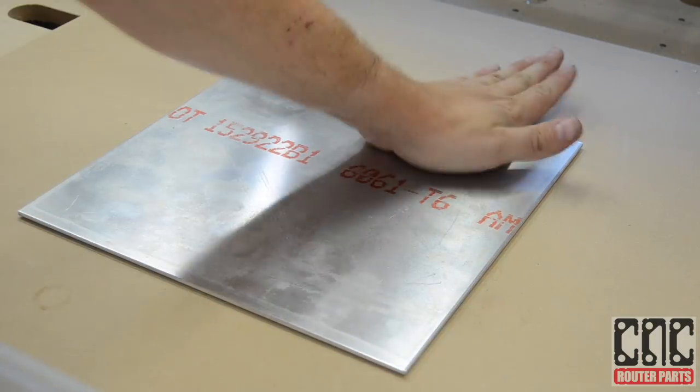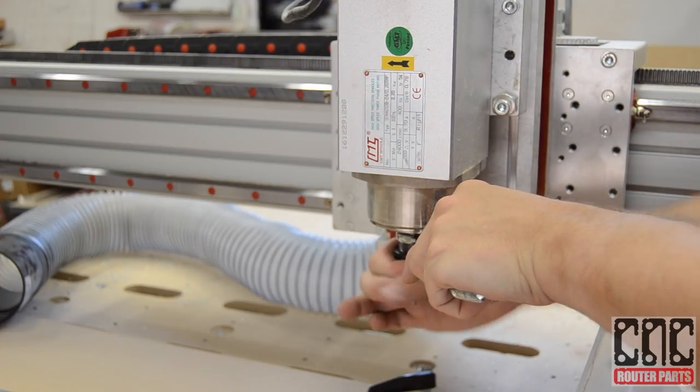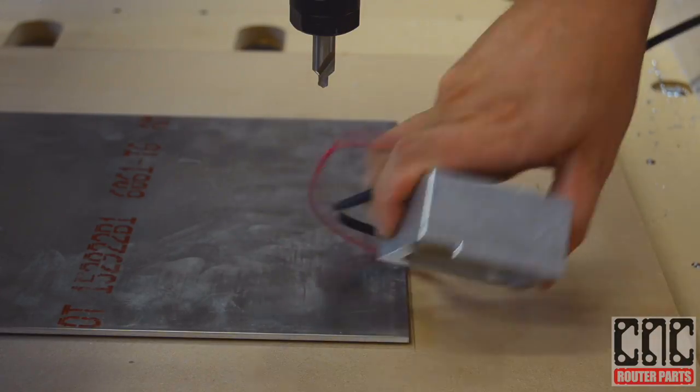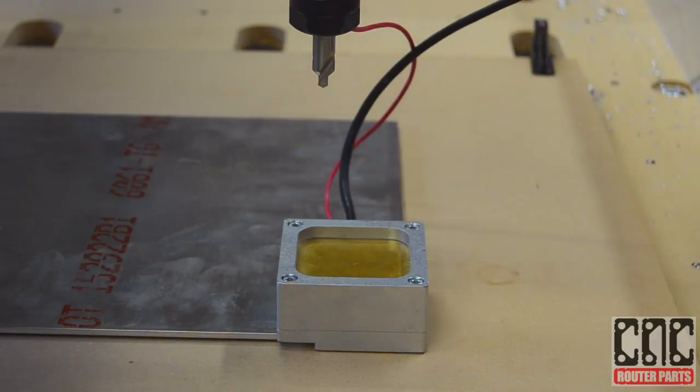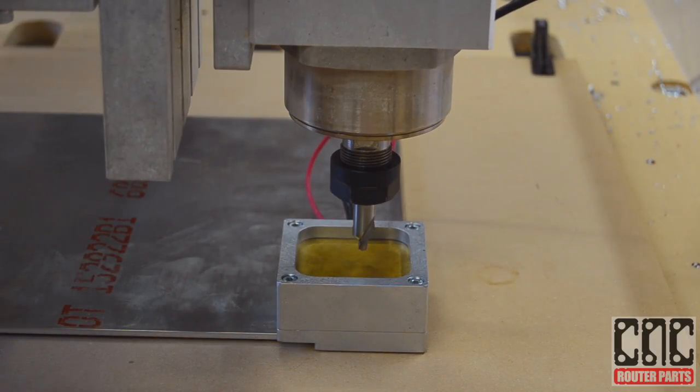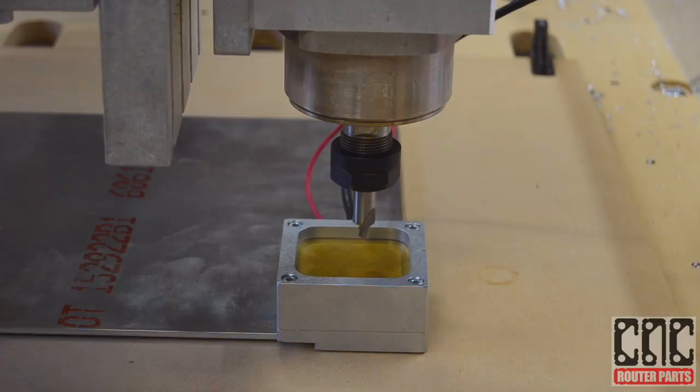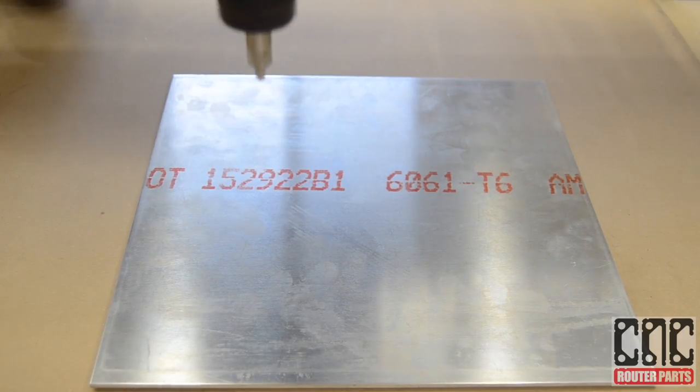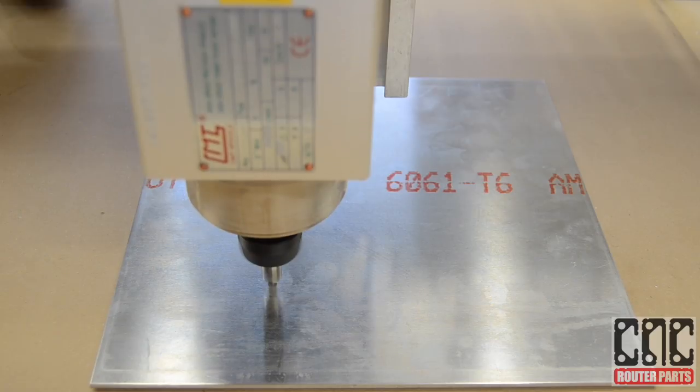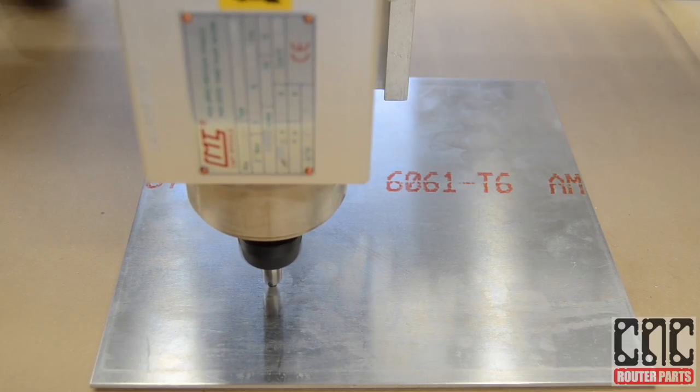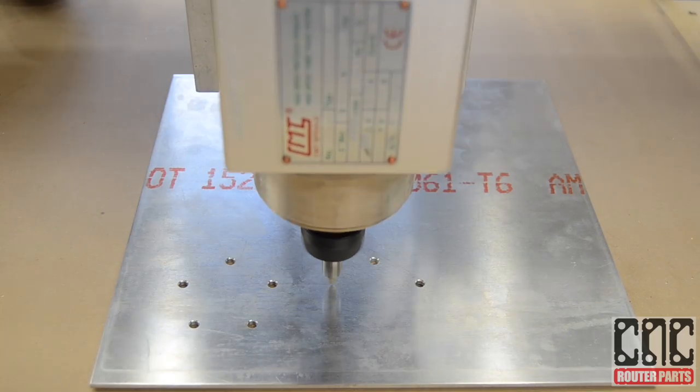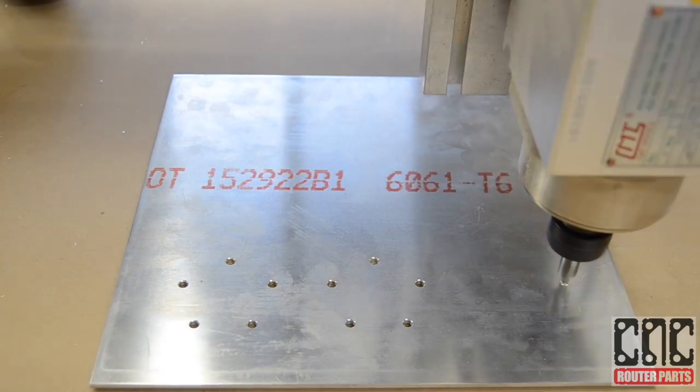I'll start with the program to create the fastener countersinks and clearance holes. I'll be able to do this in one combined drilling operation using a number four center boring countersink tool. I'll use our touch plate to calibrate the Z axis having already calibrated the X and Y work offsets. Since these are m3 fasteners the countersinks are pretty small.